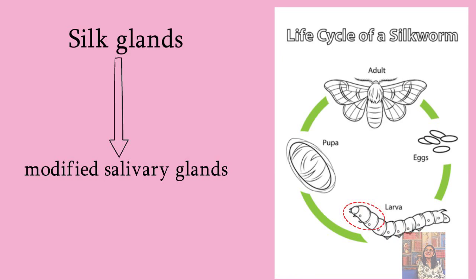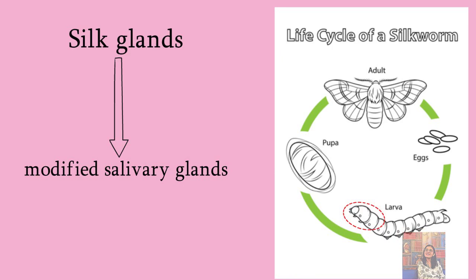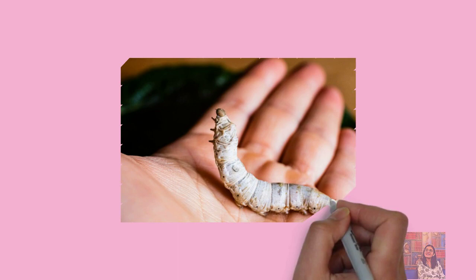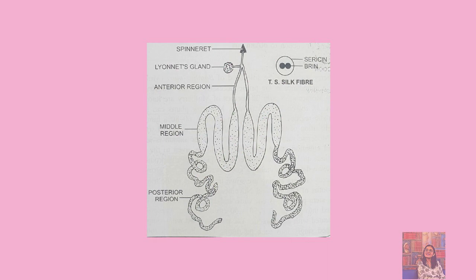Now the caterpillar looks somewhat like this — cream in color. And the silk gland looks like this; it is a very simple structure. The process of silk formation is also very simple.